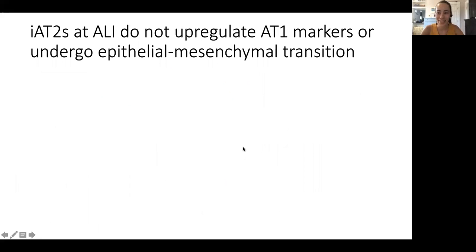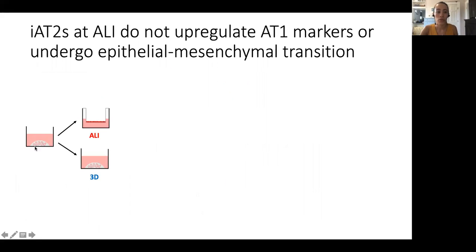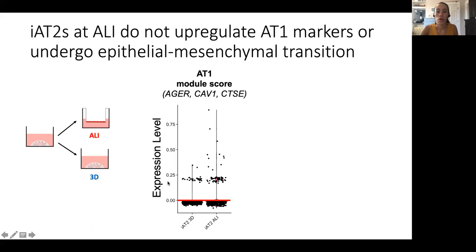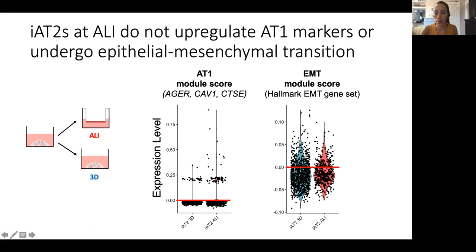You might hypothesize that at air-liquid interface, type 2-like cells would undergo differentiation to type 1-like cells or would undergo epithelial-mesenchymal transition. We don't see evidence of either of these processes in our system. When we split alveolospheres to either ALI or continue them in 3D culture and profile these by single-cell RNA sequencing, we see no meaningful expression of type 1 cell markers — shown here as a module score compositing expression of AGR2, CAB1, and CTSC. Similarly, we don't see expression of genes involved in epithelial-mesenchymal transition using a hallmark gene set, with expression near zero as marked by the red line.